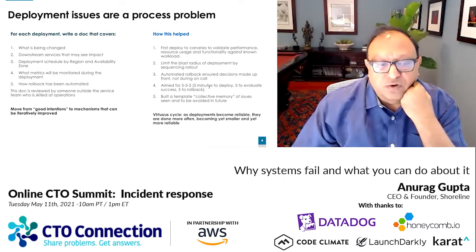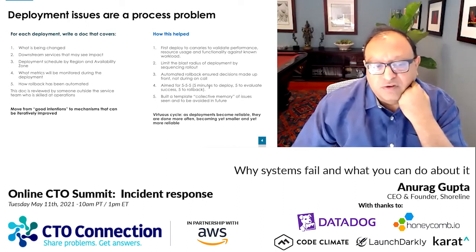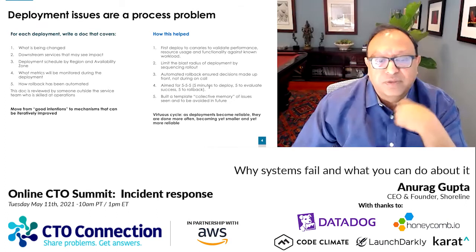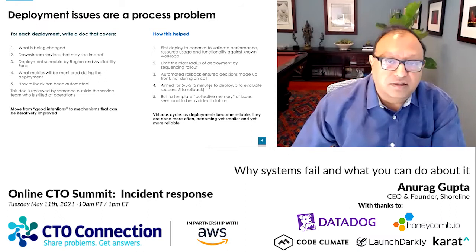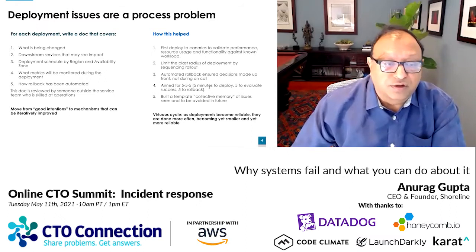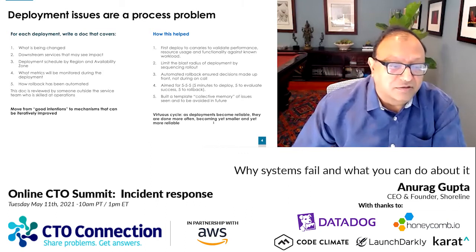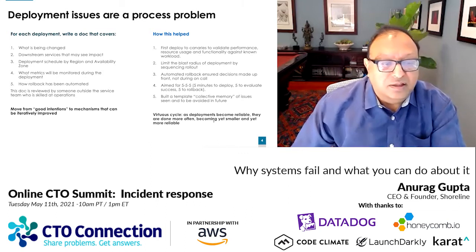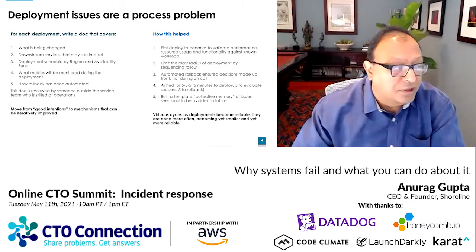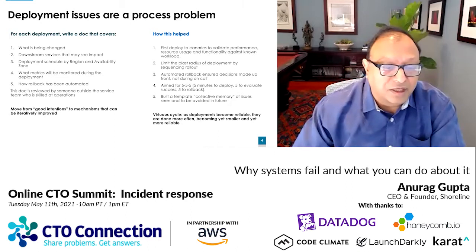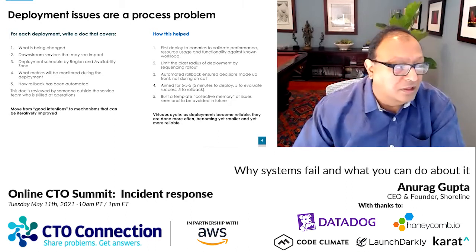We used to aim for what I'll call 555: five minutes to deploy, five minutes to evaluate, five minutes to roll back. So if you had an issue, it tended not to be an issue for very long. The template created a collective memory, and that was a virtuous cycle — as deployments became more reliable, they were done more often, and became yet smaller and yet more reliable.